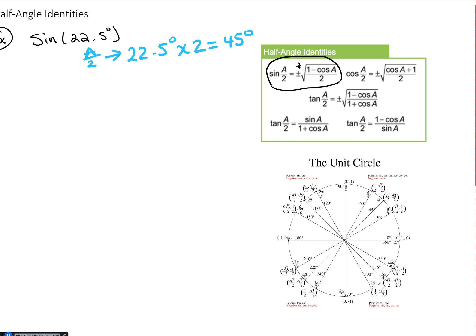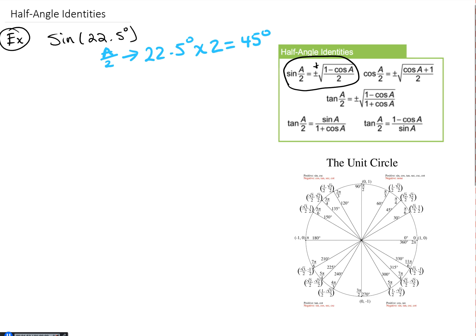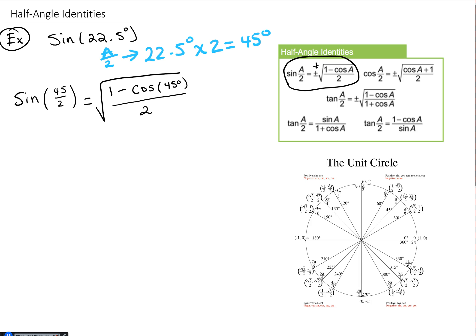So I'm going to rewrite this and say sine of 22.5 degrees is the same as the sine of 45 over 2. Then we set it equal to the square root from the identity: 1 minus the cosine of 45 degrees, all divided by 2.